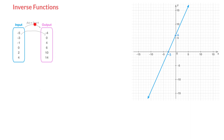If I were to replace x by the input value negative 3, then we'd obtain the output value 0. And so for each of these input values, we'd obtain the corresponding output value we see in the second box.